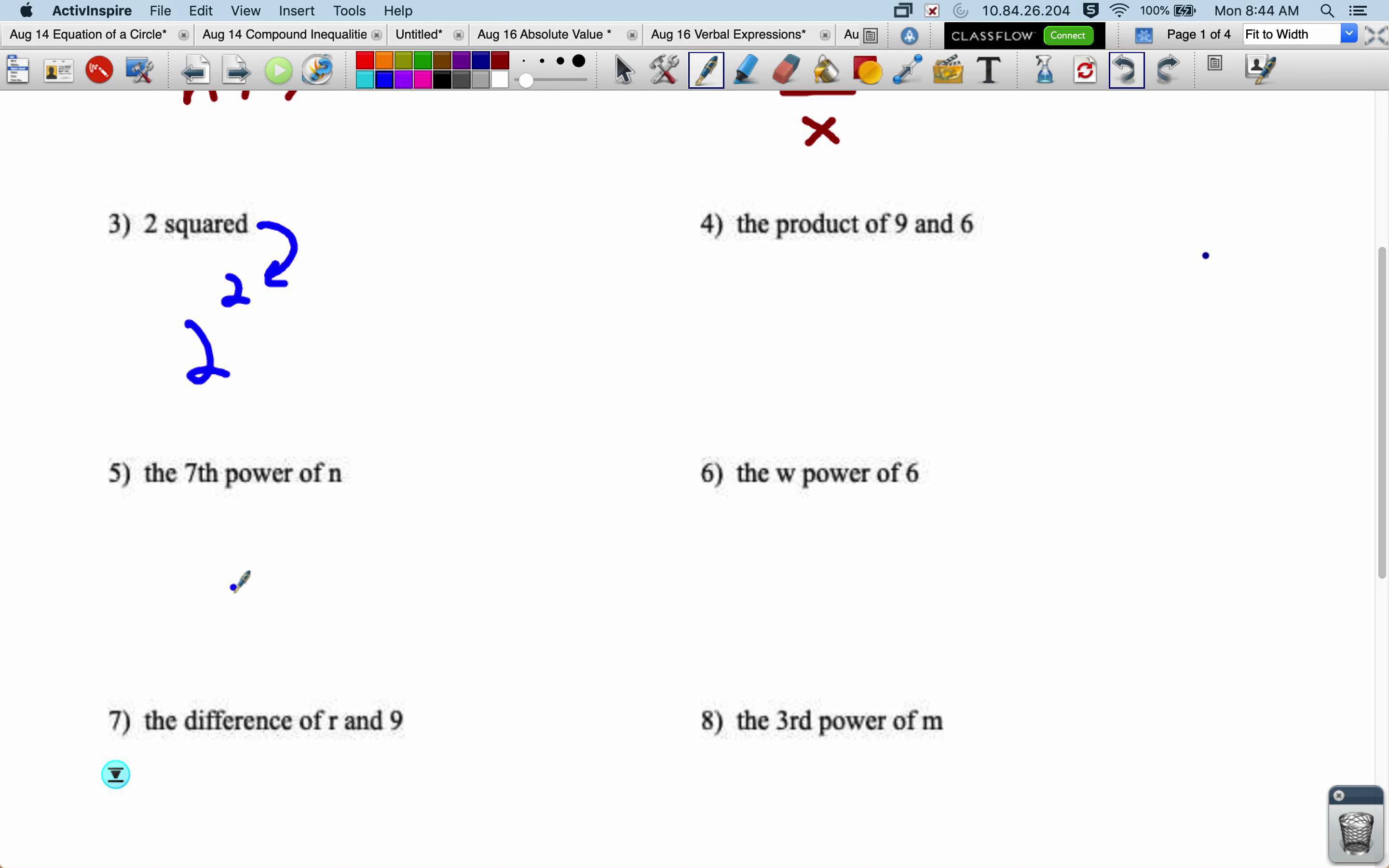So the 7th power of n would be n to the power of 7, with the 7 up top. The w power of 6, so 6 to the power of w.